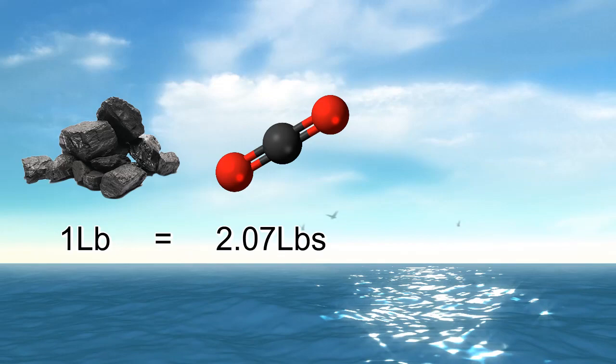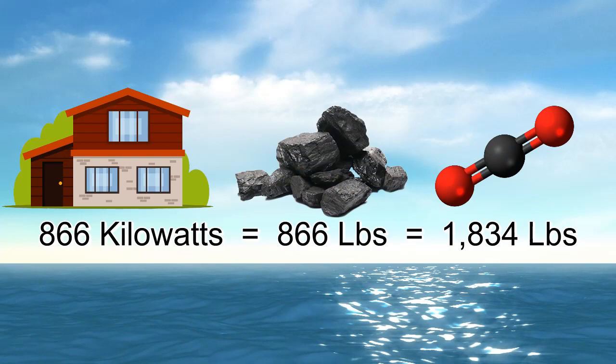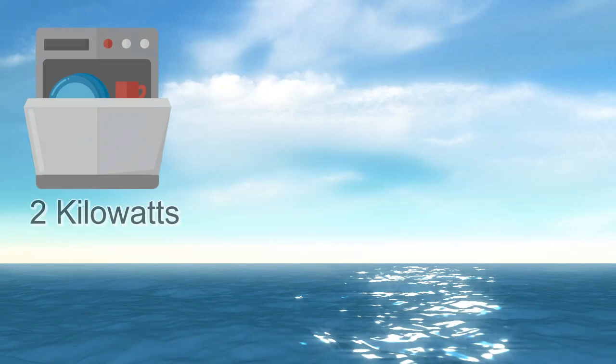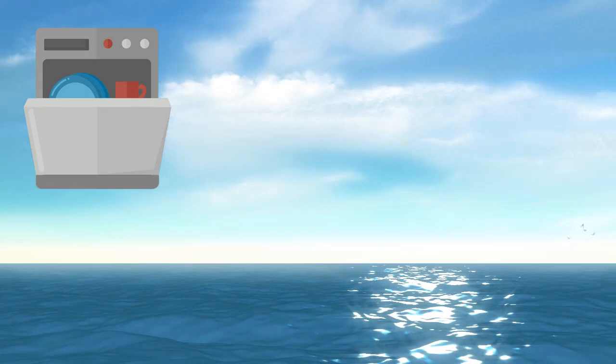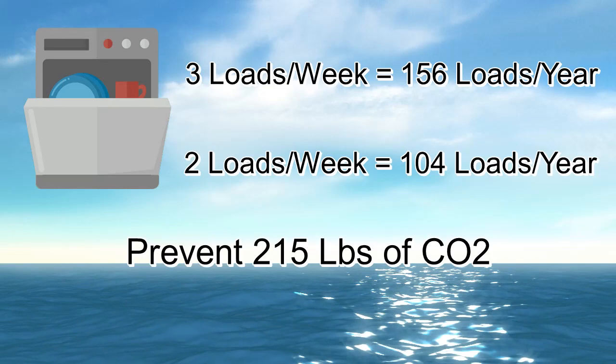The average house uses 886 kilowatts of power per month, meaning that the 886 pounds of coal used produces 1,834.02 pounds of carbon dioxide. To decrease the amount of energy used, one way is to be more efficient with the dishwasher. Each dishwasher use takes 2 kilowatts of energy, which produces 4.14 pounds of carbon dioxide. If dishwasher use were to decrease from 3 times a week or 156 times a year to 2 times a week or 104 times a year, you would prevent 215.28 pounds of carbon dioxide every year, as well as save hundreds of pounds of water.